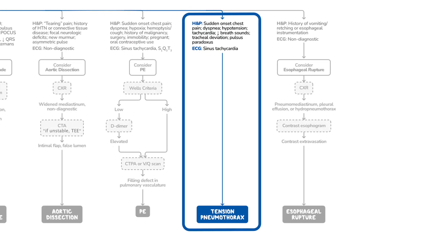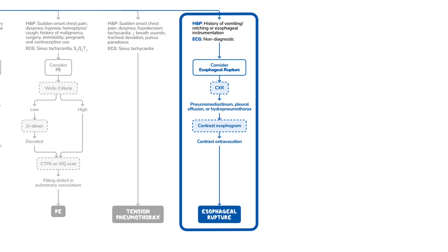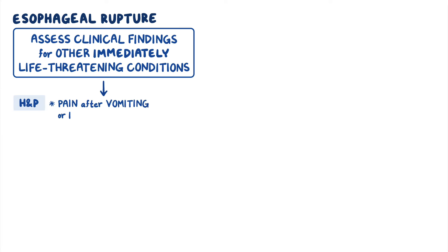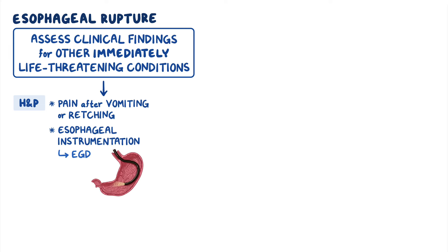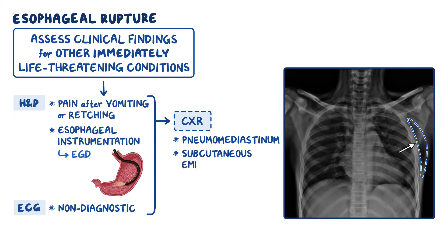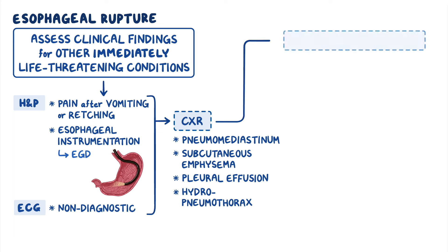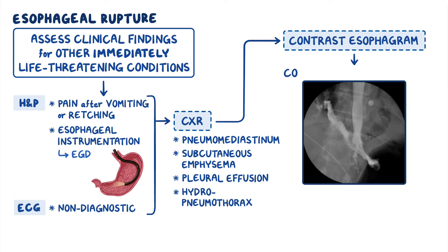We've talked a lot about important cardiac and pulmonary issues, but don't forget that gastrointestinal pathology can also present with chest pain. You should consider esophageal rupture in a patient whose chest pain developed after vomiting or retching, or undergoing esophageal instrumentation, like an esophagogastroduodenoscopy, or EGD. The ECG is typically non-diagnostic. If suspected, your first step is to order a chest x-ray. This will show pneumomediastinum, subcutaneous emphysema, pleural effusion, or a hydropneumothorax. In most cases, the next best step is a contrast esophagram. If there is contrast extravasation from the esophagus, you've made your diagnosis.